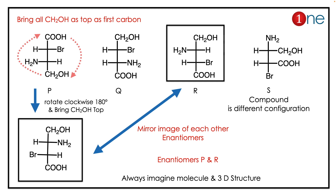To identify the enantiomer, you need a reference. Bring all the CH₂OH groups to the top and you can analyze them easily. Another way is finding the configuration, but that's more difficult. Once you bring CH₂OH to the top for P, Q, R, and S — P rotated 180° will be exactly the mirror image of R.